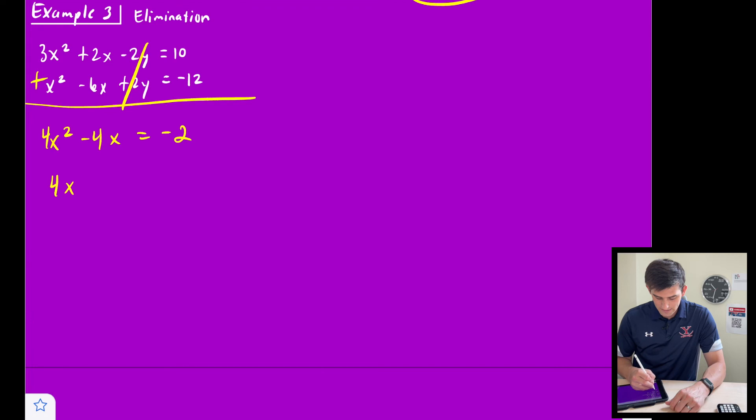So now I'm going to write this in standard form. So 4x² - 4x + 2 = 0. And so now let's use the quadratic formula. Okay.